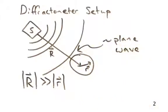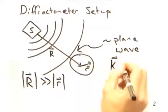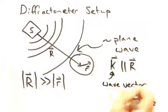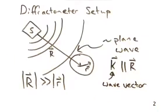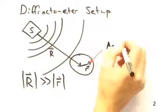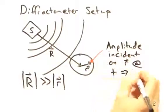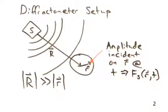Because we made this large capital R approximation, we can also treat the vector of wave propagation, k, as parallel to capital R. Perfect. So now that we have a plane wave incident upon our sample, we want to know the amplitude of our wave at any point, little r, and any time t within our sample.